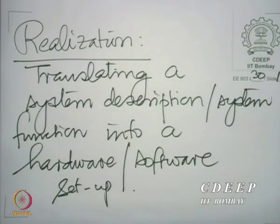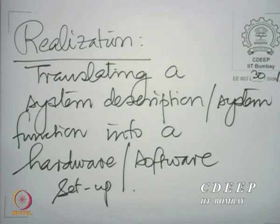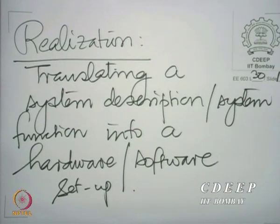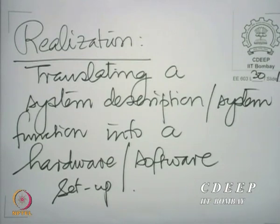I say hardware or software or a combination of the two because in today's world, it is largely software that is used. That is the whole advantage of discrete time systems — you could set up one hardware system and then use the software to realize different filters. That is the beauty of discrete time signal processing. You cannot do that with analog processing; in analog processing you could perhaps conceive of a generic structure which would realize a few classes of filters, but they are going to be very restricted.